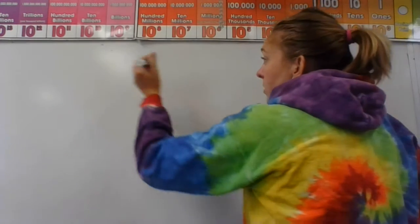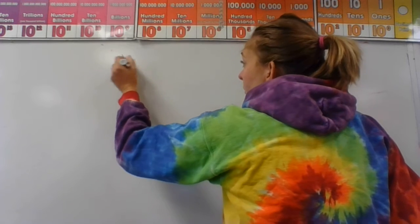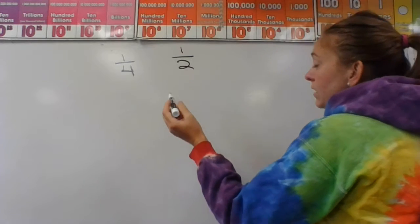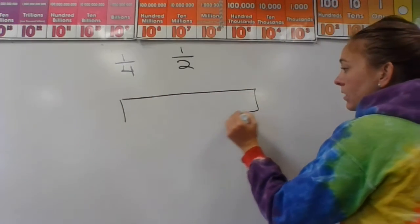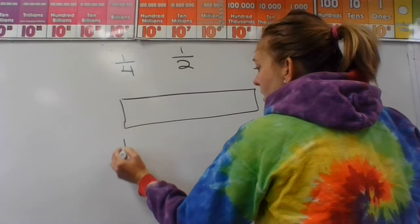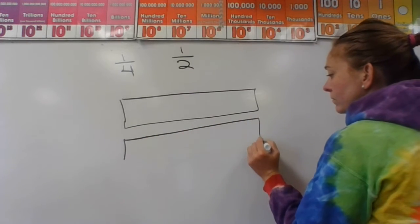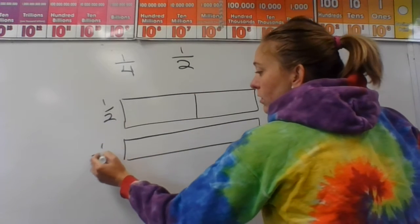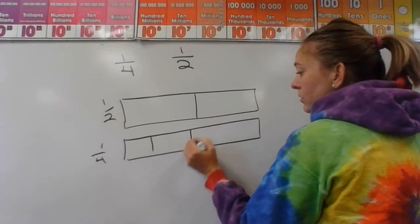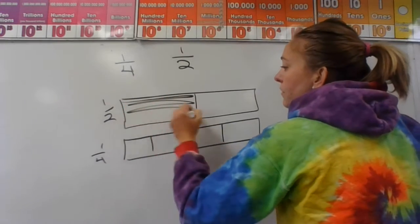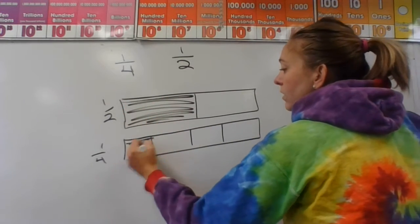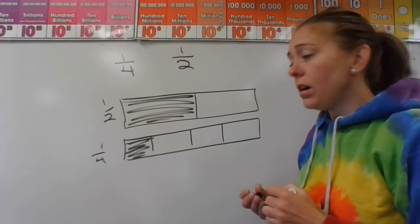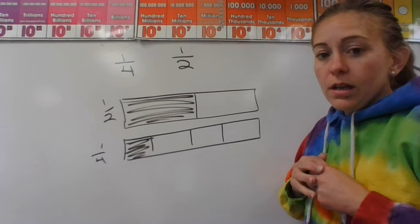So if I had two fractions like one fourth and one half and you weren't sure, you could draw tape diagrams for both. I have my tape diagrams here and I'll break up my one half and my one fourth into sections, shade in one half and shade in one fourth. With the picture, because they're the same length, it's a lot easier to tell that one fourth is a lot smaller than one half.